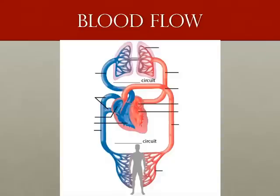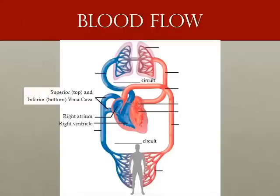Blood flows to the lungs and to the body, each from a different side of the heart. Let's trace the route of blood around the body. We start at the main veins returning oxygen-poor blood to the heart — this is the vena cava. From there, blood flows into the right atrium, which dumps the blood into the right ventricle. The right ventricle pumps the blood out into the pulmonic circuit — the path of blood through the lungs to get rid of carbon dioxide and pick up oxygen.